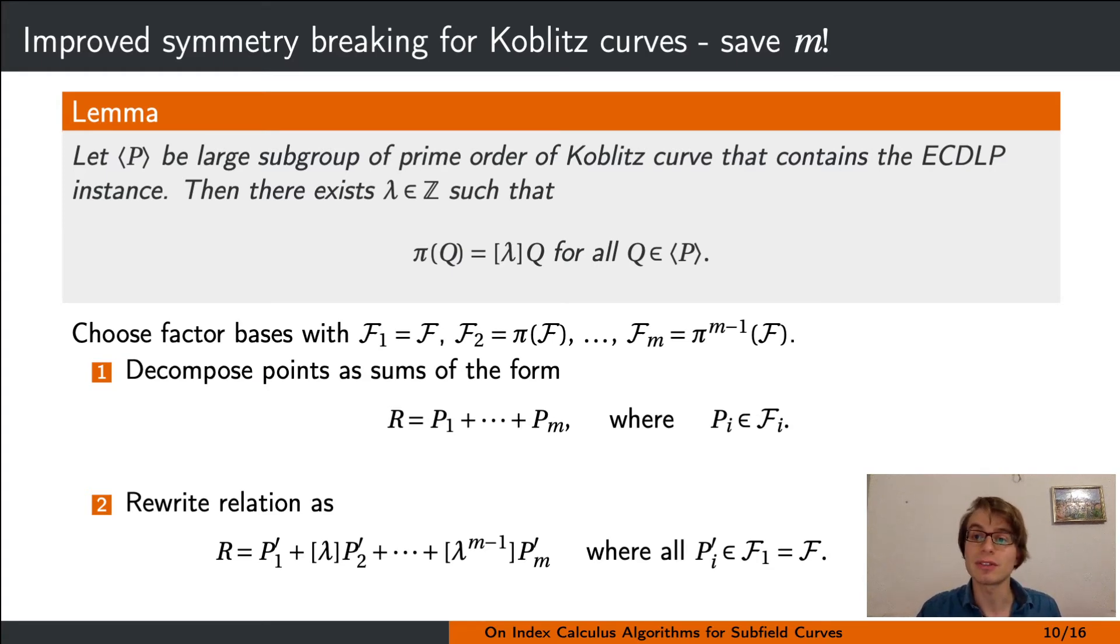Since the degree of the summation polynomial grows exponentially in m, m is usually fairly small in practice, and this means only a small speedup is possible by symmetry breaking. However, the Frobenius endomorphism allows further improvements to index calculus.